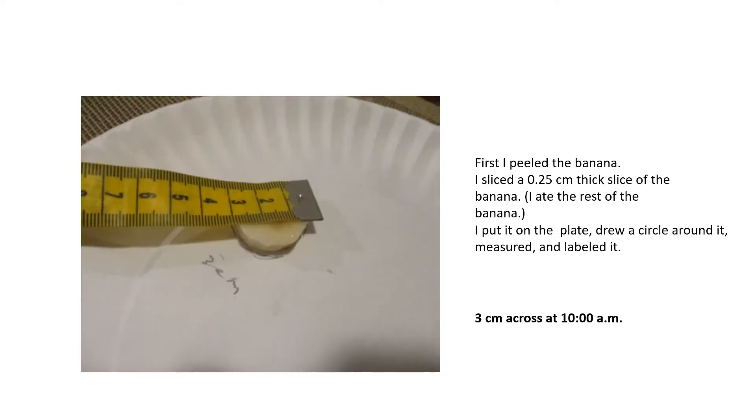First I peeled the banana and then I sliced a 0.25 centimeter thick slice. This is not the most accurate measuring tape, but it was about that. I ate the rest of the banana. I put my banana on the plate and drew around it, then measured the actual circle, and it was three centimeters at 10 a.m.